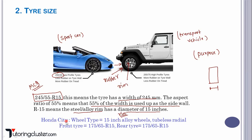In the case of the Honda City, the wheel type is 15-inch alloy and it's a tubeless tire. The front tire is 175/65-R15: 175 is the tire width, 65 is the aspect ratio meaning 65% of the width is used as the sidewall, and R15 means a steel or alloy rim with a diameter of 15 inches. The rear tire specification is the same. This is very important from an MCQ point of view.